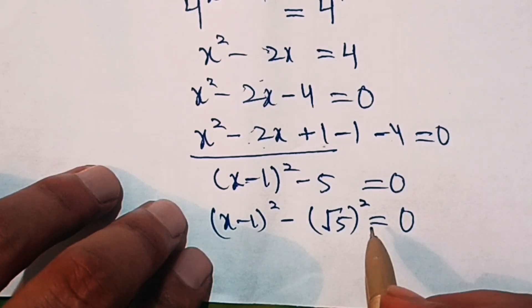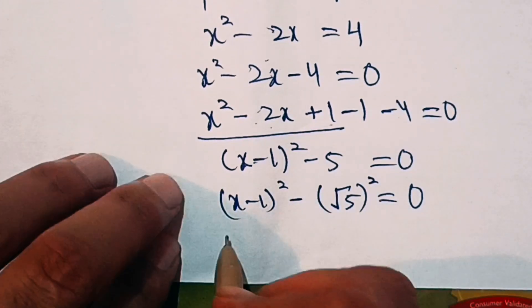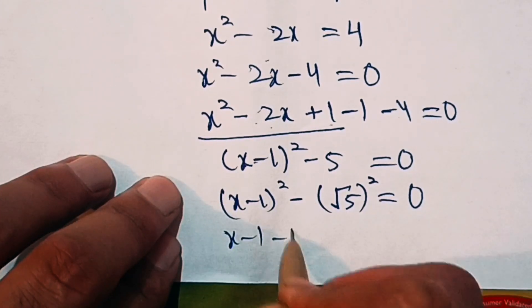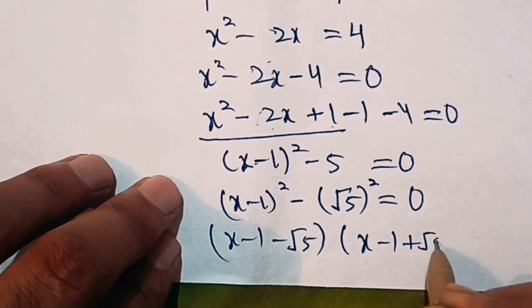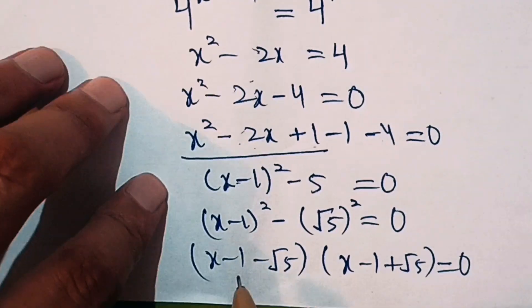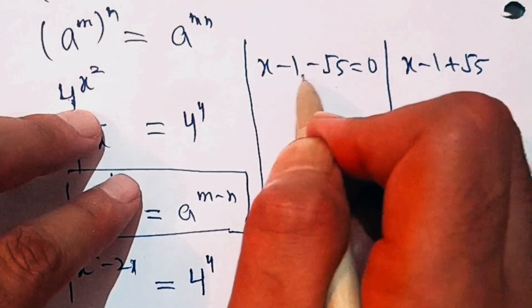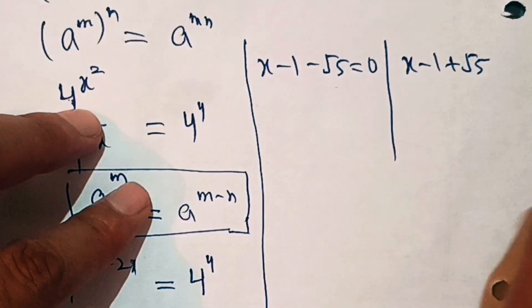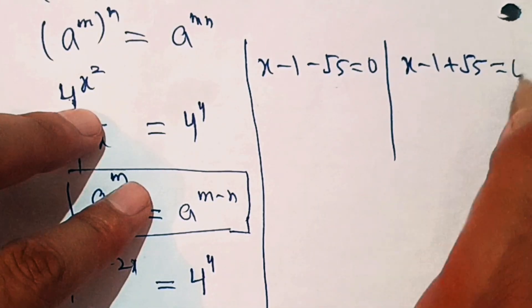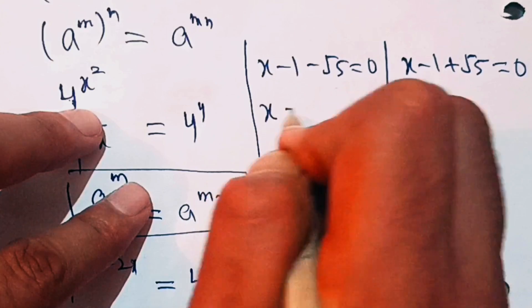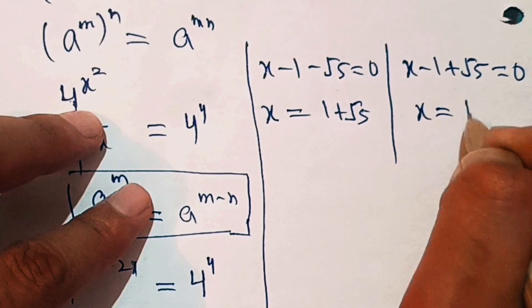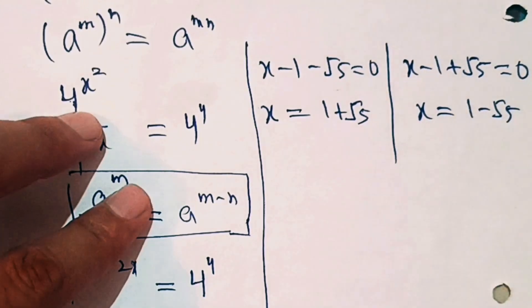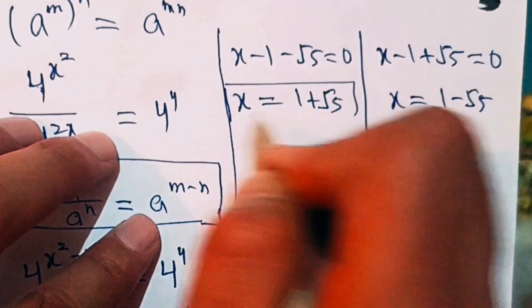Now this is in the form a square minus b square, where we can write 5 as under root 5 squared. So the next step is x minus 1 minus under root 5 into x minus 1 plus under root 5 equal to 0. These are the two factors, so either of them is equal to 0. Either x minus 1 minus under root 5 equals 0, giving x equal to 1 plus under root 5, or x equals 1 minus under root 5. These are the solutions of the given problem.